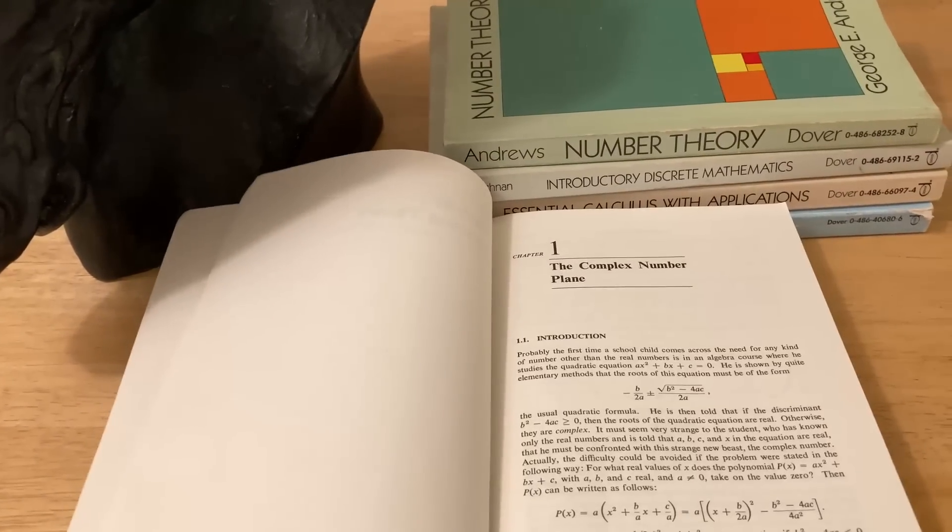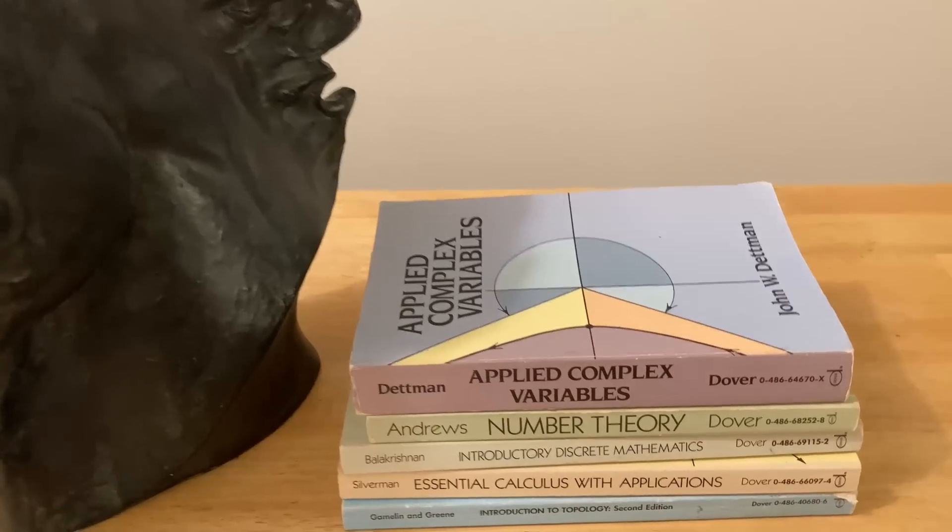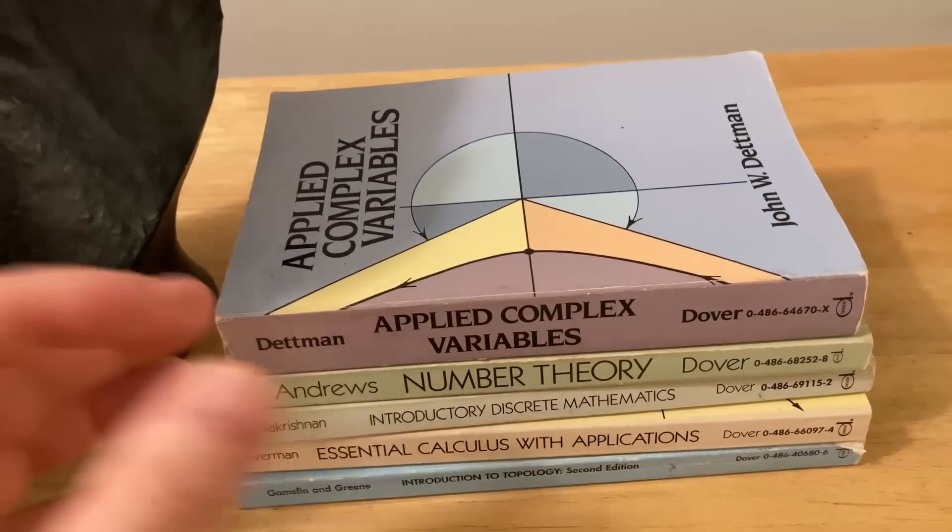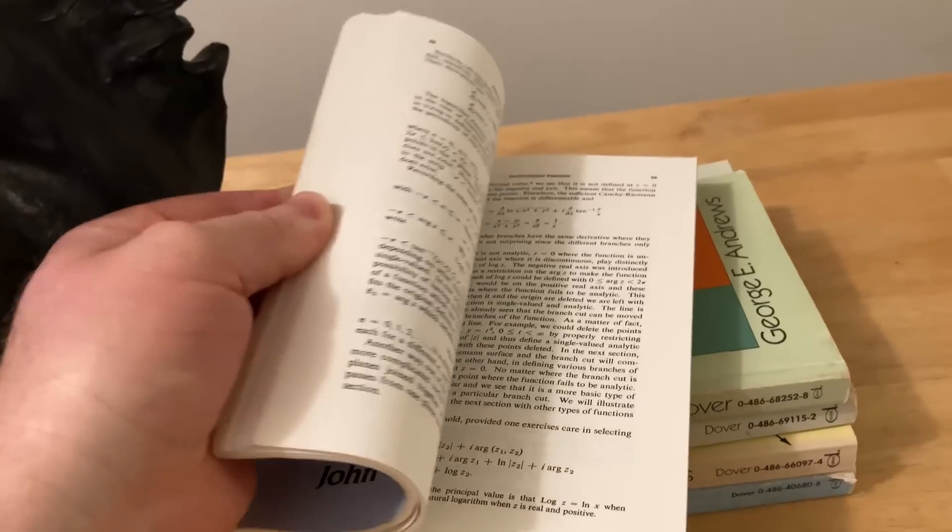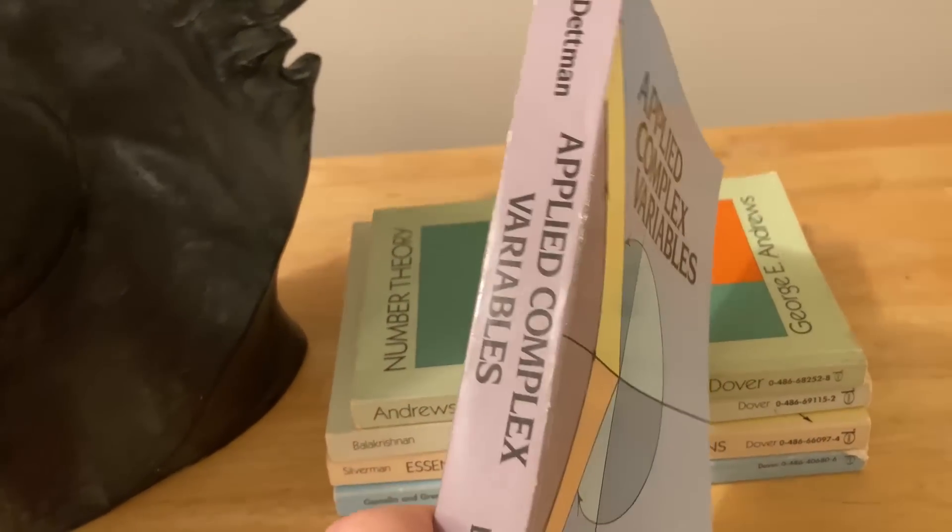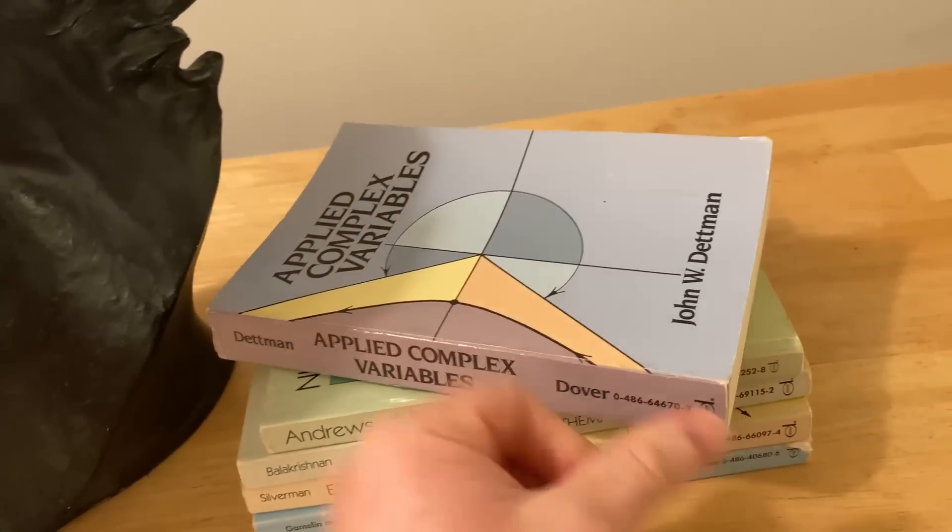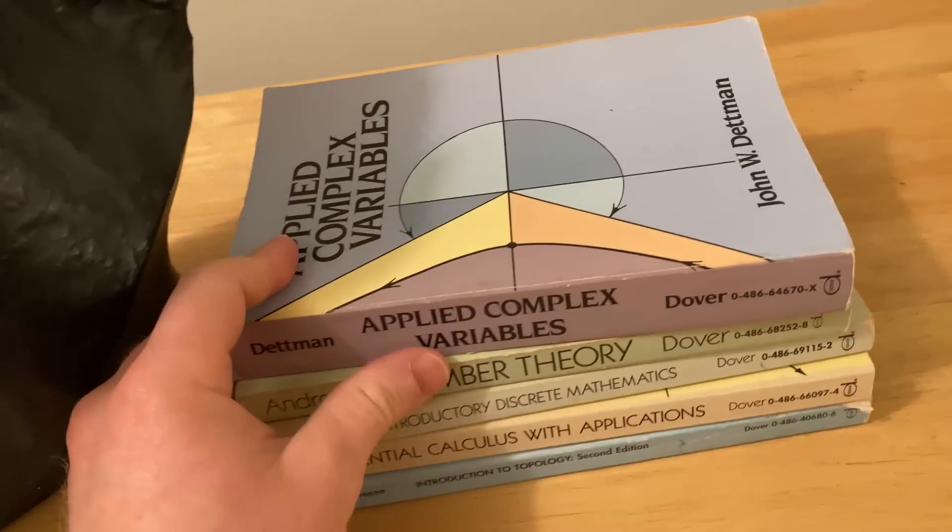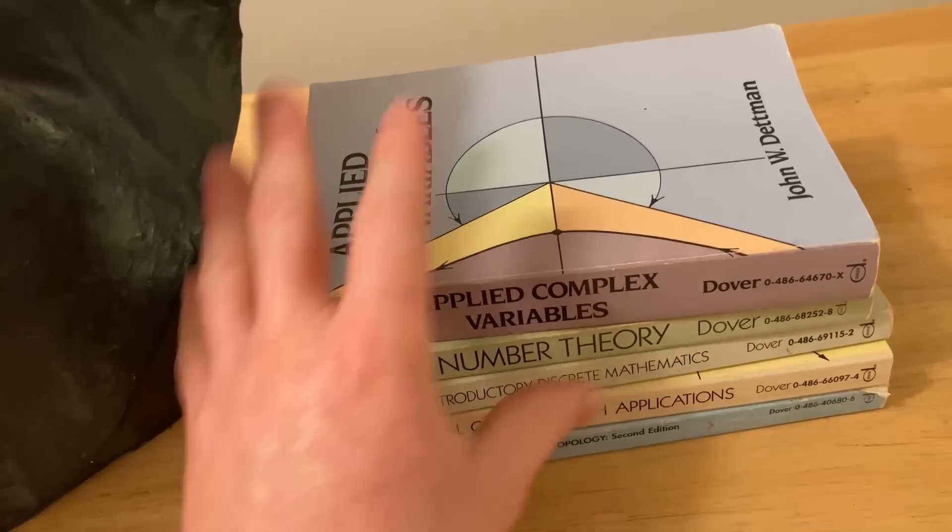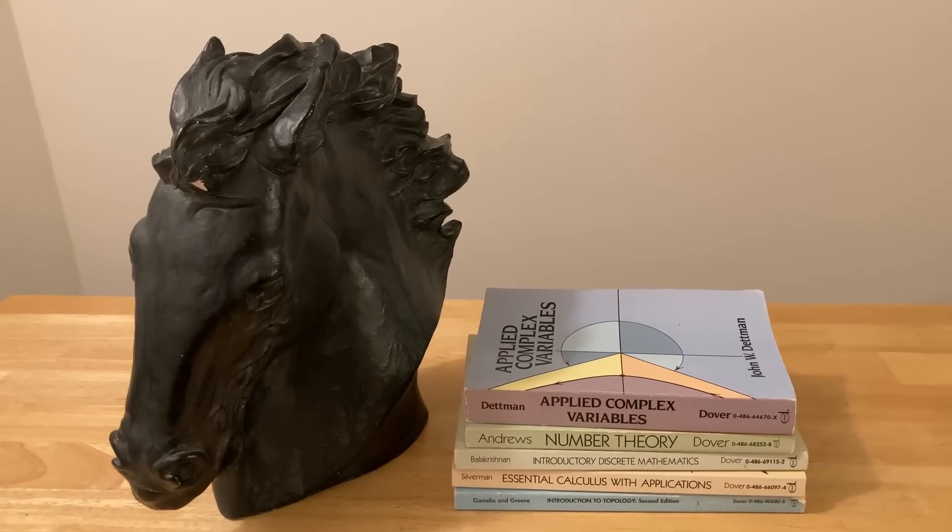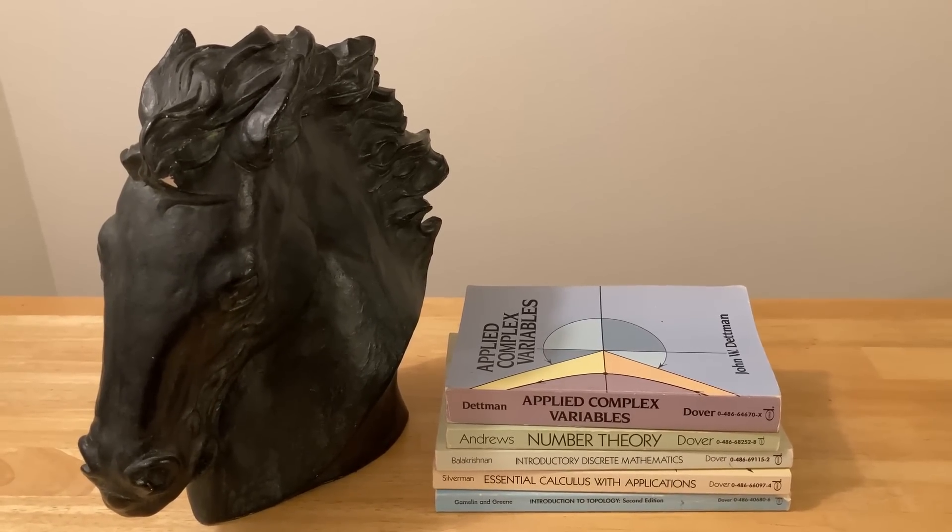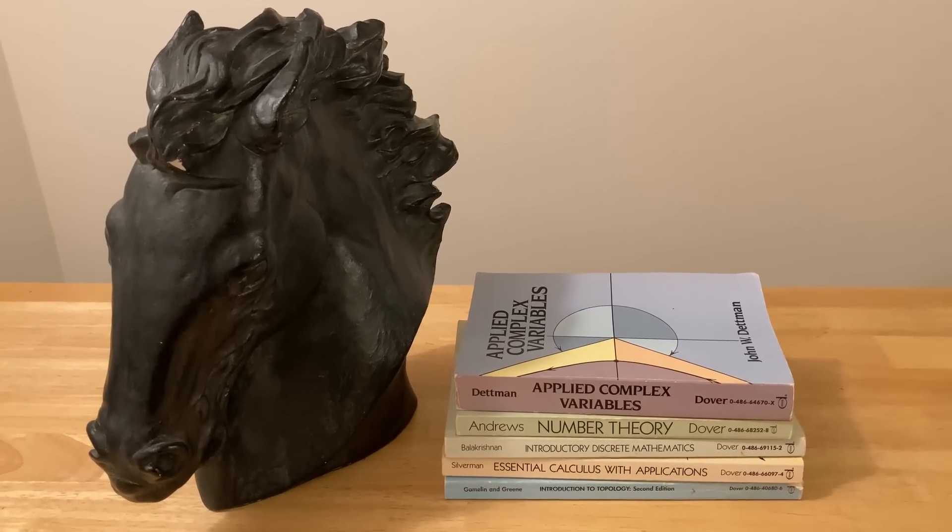I should also mention that despite these books being paperbacks and me personally loving hardcover books, these are actually really good in terms of the quality of the materials used to make the books. So I haven't had any problems with any of my Dover books falling apart, and I have many more Dover books. I just picked these five because I think these are all really really good. Those are five awesome books that I think are worth having. I hope this video has been helpful. Good luck and take care.